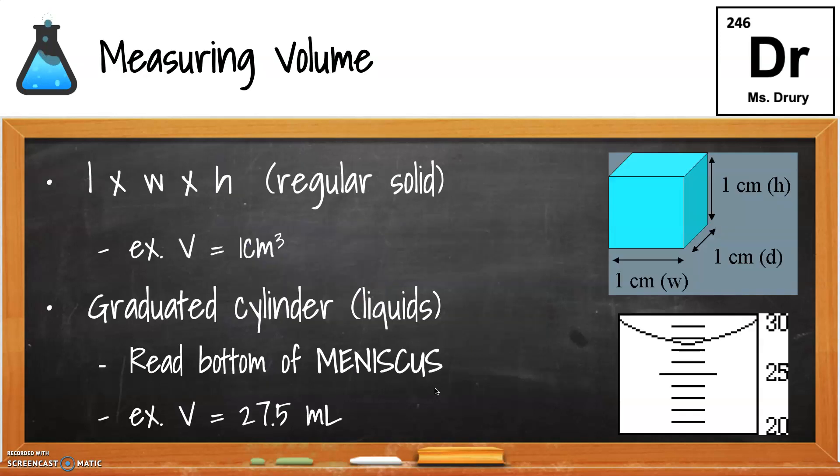Since the mass is pretty straightforward, let's go into volume in a little more detail. You can find the volume by doing length times width times height of a regular solid. The example on the right shows that the length, width, and height of a cube are one centimeter, and when you multiply one by one by one, that means this is a cubic centimeter.